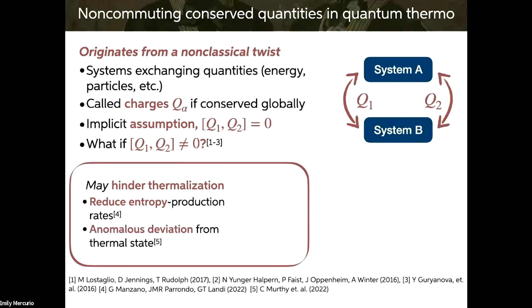They looked at a collisional model where you have two reservoirs, pulling out a subsystem from each, applying a unitary on those two and then sending them back into their respective subsystems. You look at the entropy production generated there. When the action obeys a non-abelian symmetry, the rate of entropy production decreases. Another result is an anomalous deviation from the thermal state related to the eigenstate thermalization hypothesis, or ETH. The correction to the long-term expectation value is larger when the charges don't commute.